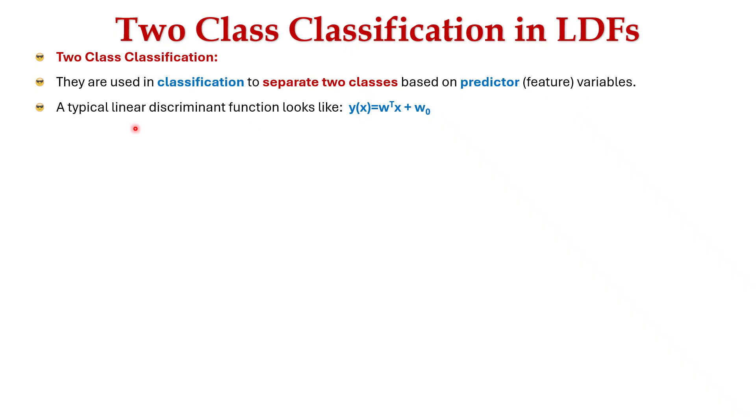Now let's learn about two class classification in linear discriminant functions. They are used in classification to separate two classes based on predictor variables. A typical linear discriminant function looks like y(x) = w^T x + w₀, where x is the feature vector, w is the weight vector, and w₀ is the bias or threshold.